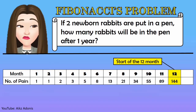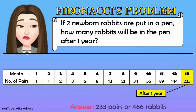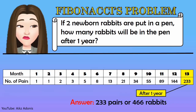However, we need to identify the number of rabbits after a year. So we need to continue the sequence up to the 13th term of the sequence. So the final answer to the problem is 233 pairs or 466 rabbits.